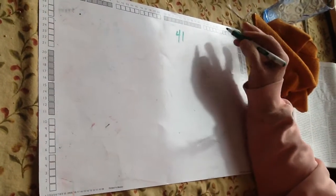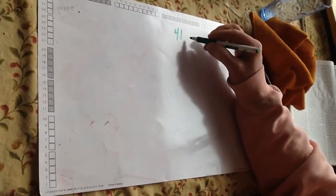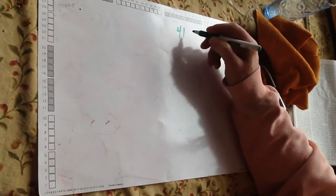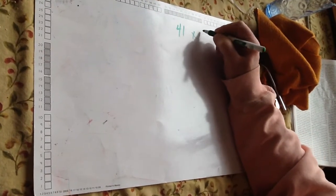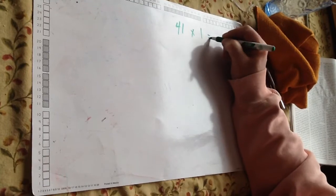Multiplication is coming up with an understanding that you're finding groups of a given number. So we know that one group of 41 is 41.